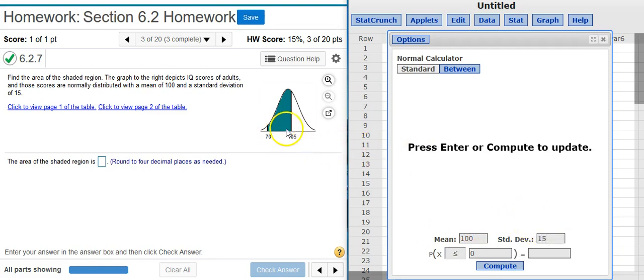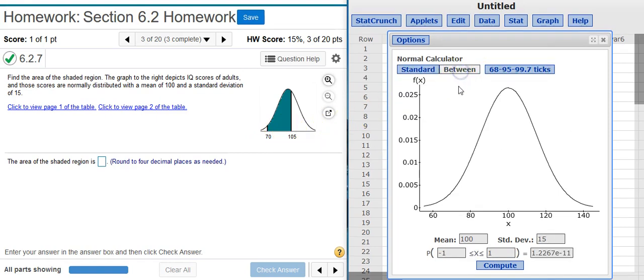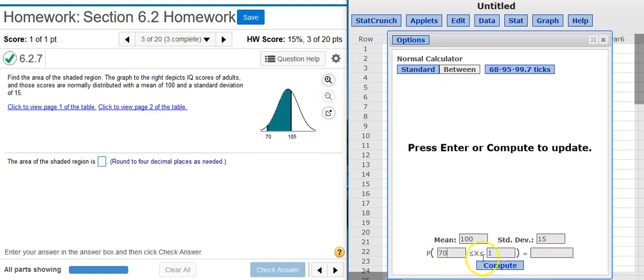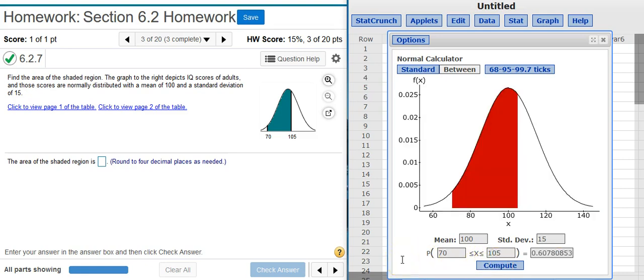And I'm looking for the area in between two values. So, I want to come up here and select the between option, and then I just come down here and put those two values, and I want to get the area in between. And when I press Compute, out comes the area in between those two values. That is the area in between the shaded region, which is the same as the probability of selecting something between those two values.